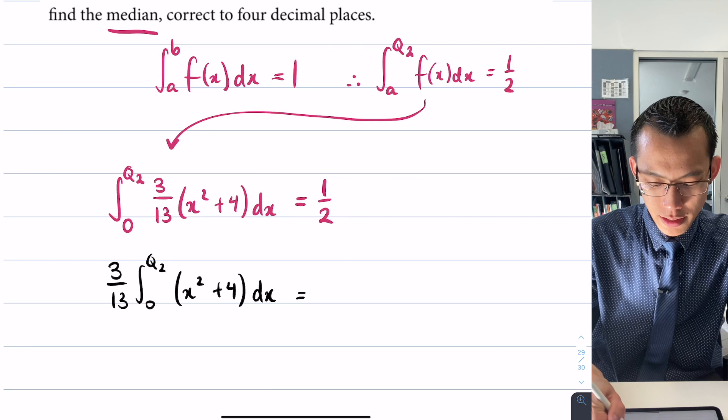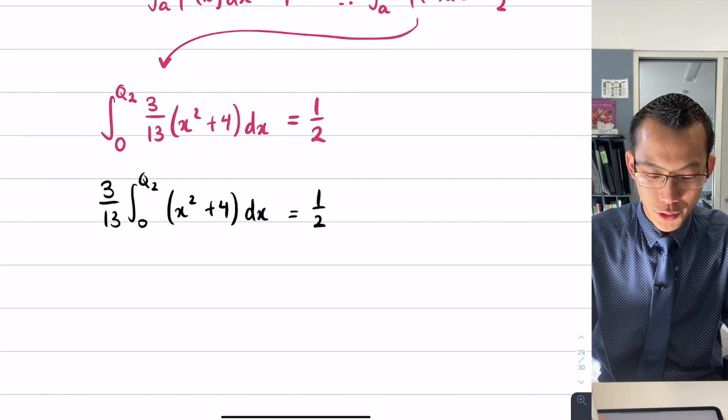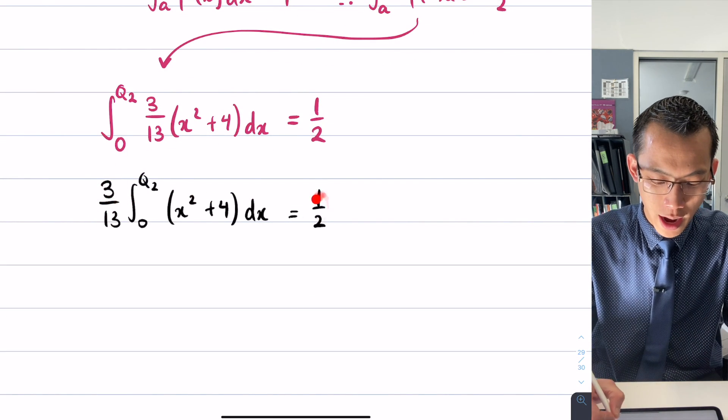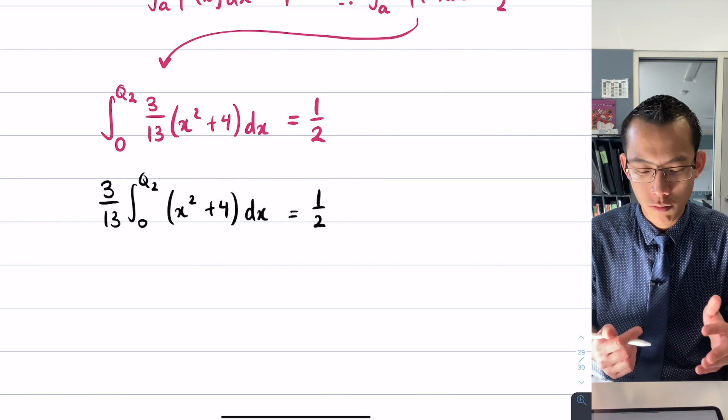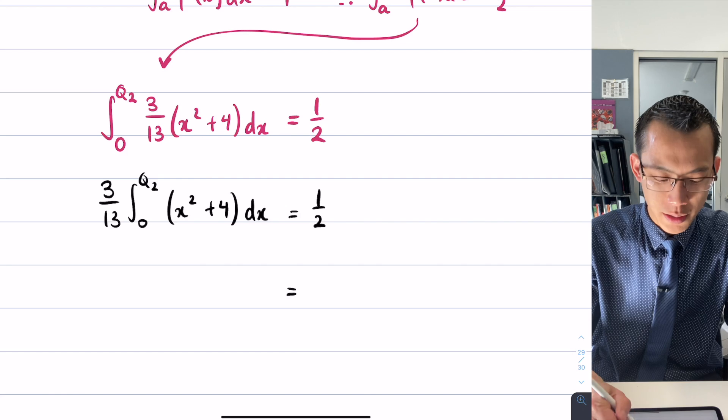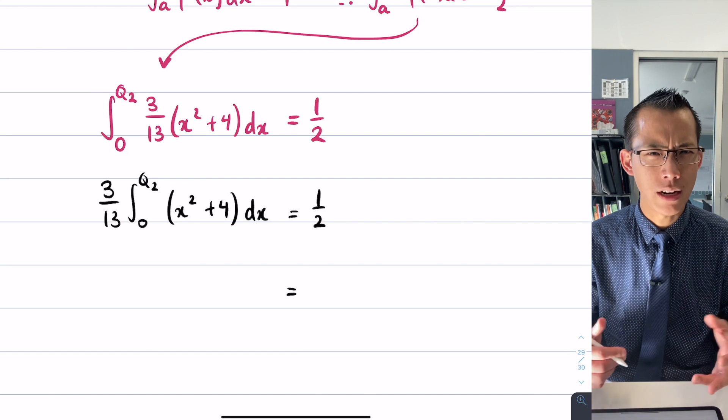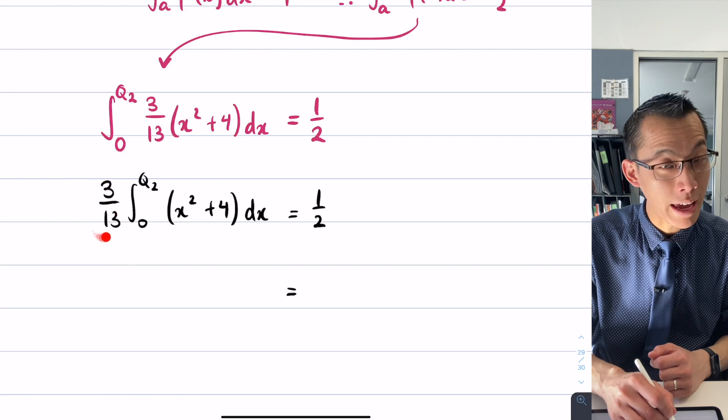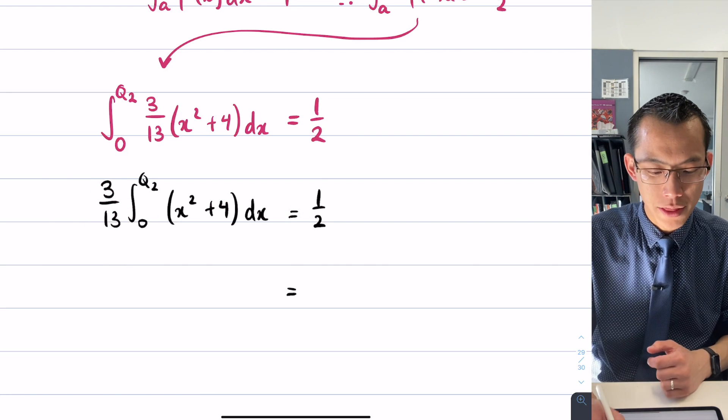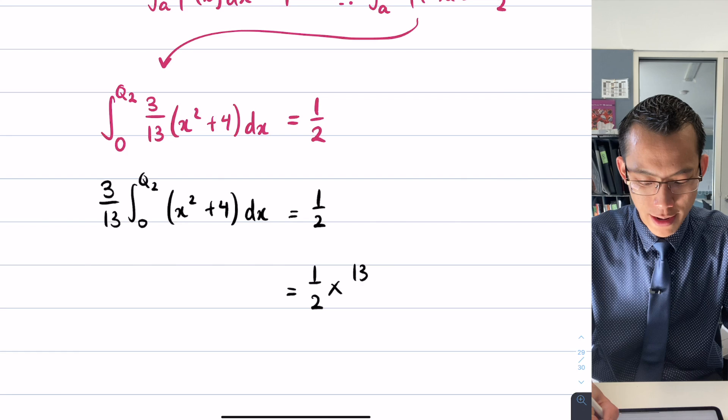I've got this 3/13 over here and this half over here, so these are both constant coefficients so I might as well combine them. I'm going to multiply both sides by 13/3, the reciprocal of this, which will cancel this term. The multiply by 13/3 will just end up on the right hand side.